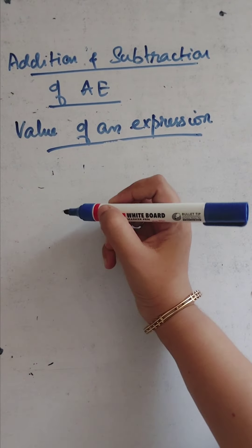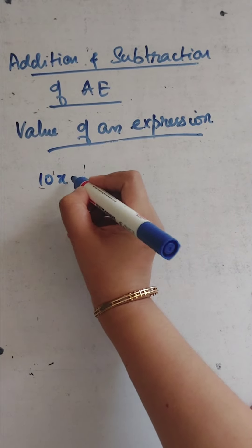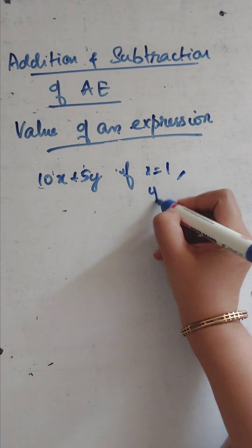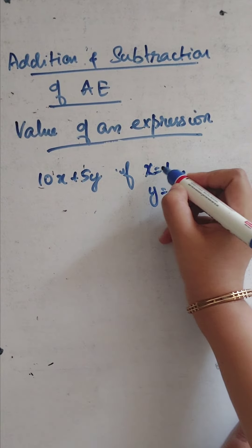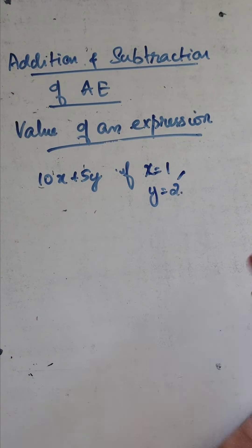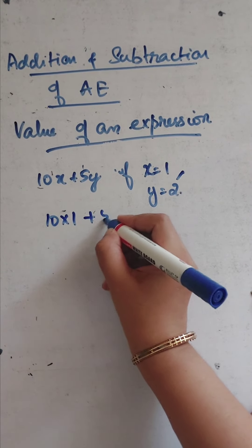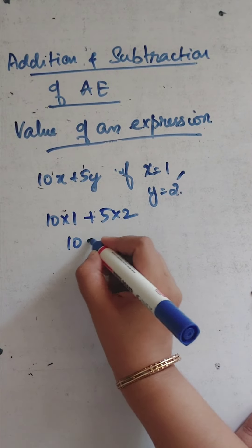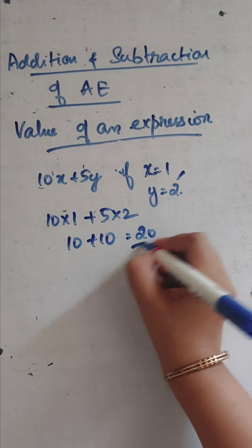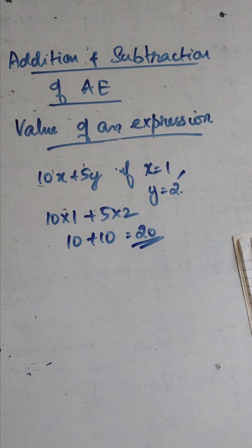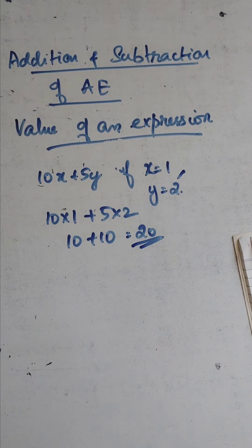Another example: find the value of 10x plus 5y if x equals 1 and y equals 2. Substitute the values: 10 into 1 plus 5 into 2, that is 10 plus 10, which equals 20. This is how you find the value of an expression. In the next video I will solve some exercise problems for you. Thank you, bye bye.